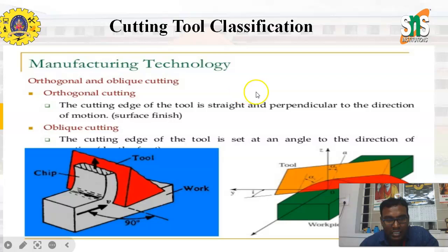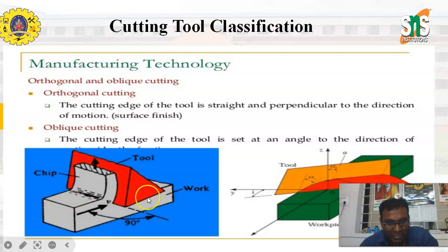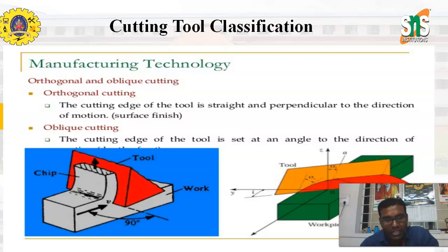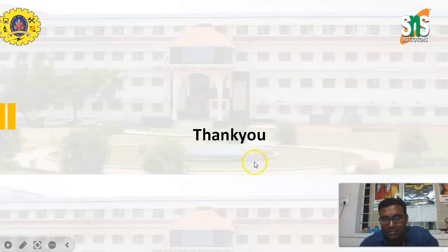In orthogonal cutting, the cutting edge of the tool is straight and perpendicular to the direction of motion, as shown in the figure. Whereas in oblique cutting, the cutting edge of the tool is set at an angle to the direction of the line of action. Thank you.